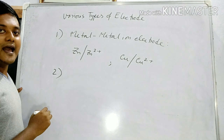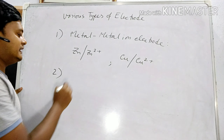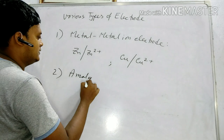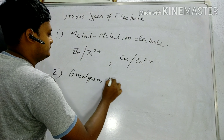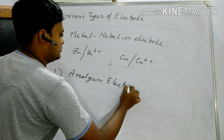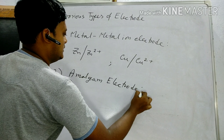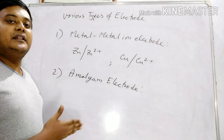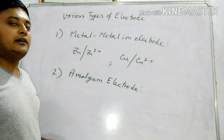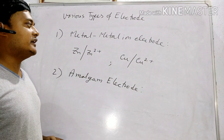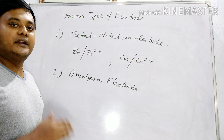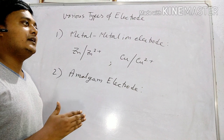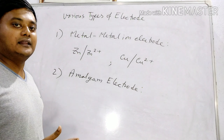The second type is the amalgam electrode. These are similar to the metal-metal ion electrode; the only difference is that the metal is taken in the form of its amalgam.